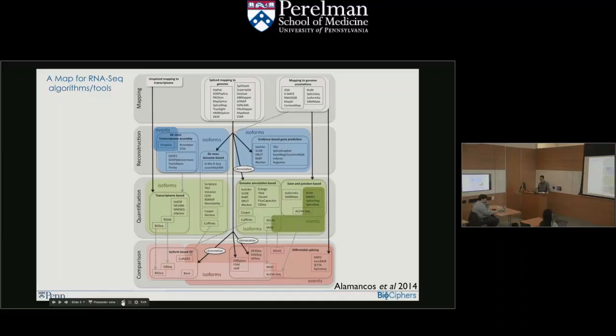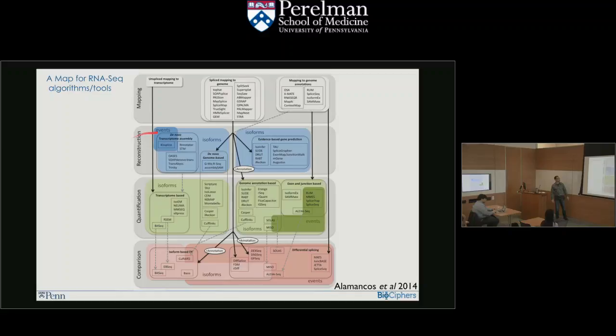We'll send you later a link where you can make comments and suggestions. This is from a 2014 review — already not fully up to date — showing many different algorithms for RNA-seq data analysis, starting from mapping, reconstructing, quantification, and comparisons. You can see a lot of names and algorithms and how they connect to create pipelines for different analyses. The take-home message is that it's complex — there's a lot of things out there.